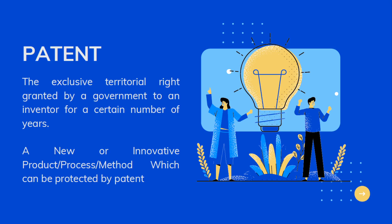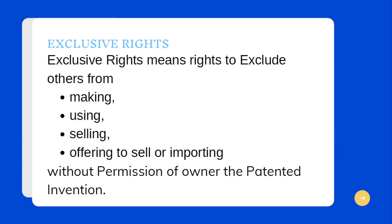So let's start with the first one, that is patent. So what do you mean by patent? The patent is the exclusive territorial right granted by a government to an inventor for a certain number of years. A new or innovative product, or an innovative process or method, can be protected by the patent. Exclusive right means the right to exclude others from making, using, selling, offering to sell, or importing without the permission of the owner of the patented invention.